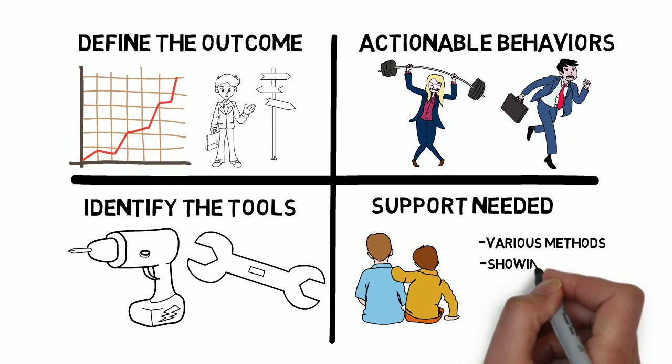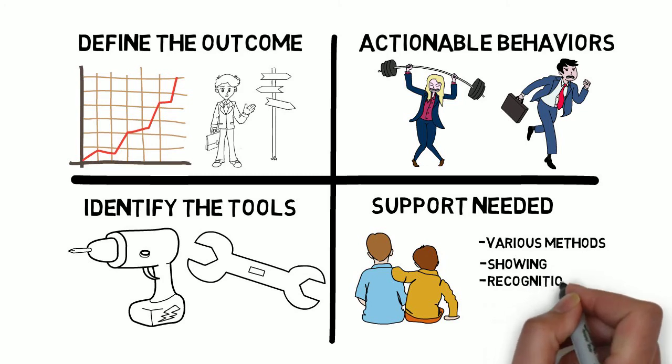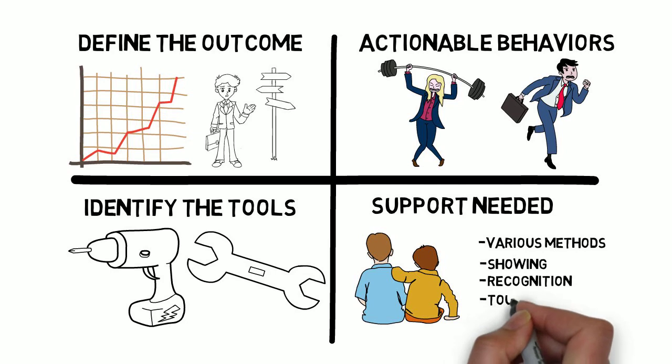The employee needs to understand the outcome and how to achieve that goal. The leader needs to understand how to best support that employee. Support can include showing how to do the process lined out in the actionable behaviors, giving the employee recognition, positive feedback, or even tough love. The support needed will vary based on the employee and the best method to support them.